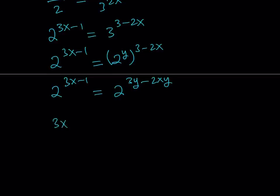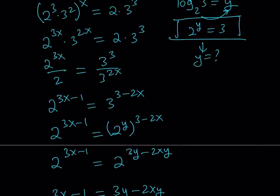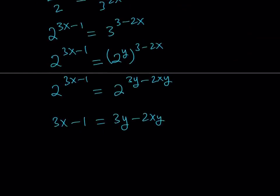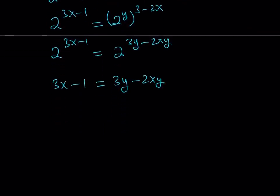From here we get that 3x minus 1 equals 3y minus 2xy. Now remember our goal was to find y in terms of x so well why did I distribute right? I didn't really need to distribute but anyways you can just go ahead and take out the y here and it's going to give you 3 minus 2x. And since our goal is to solve for y I can write it as 3x minus 1 divided by 3 minus 2x.